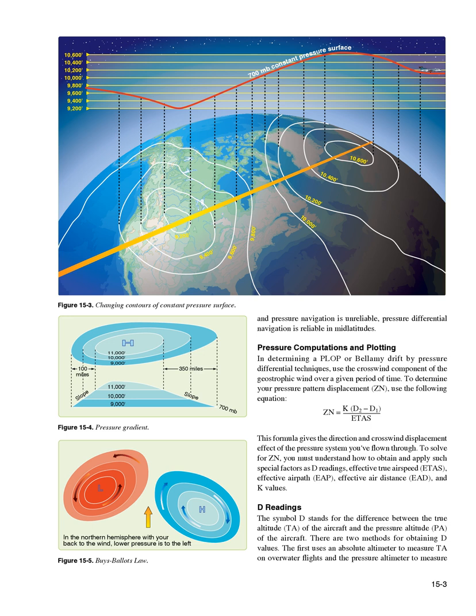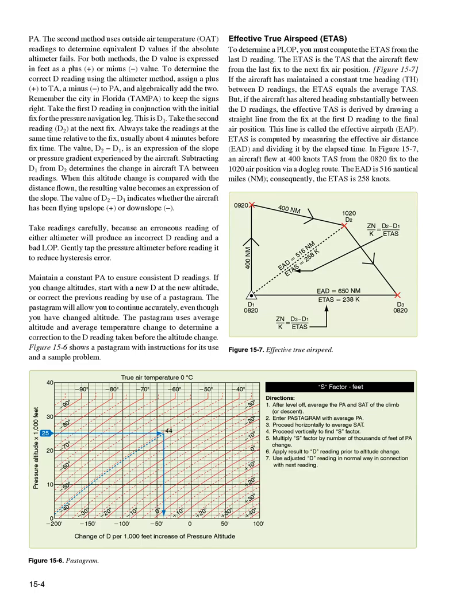D readings: the symbol D stands for the difference between the true altitude (TA) of the aircraft and the pressure altitude (PA) of the aircraft. There are two methods for obtaining D values. The first uses an absolute altimeter to measure TA on overwater flights and the pressure altimeter to measure PA. The second method uses outside air temperature (OAT) readings to determine equivalent D values if the absolute altimeter fails. For both methods, the D value is expressed in feet as a plus or minus value.